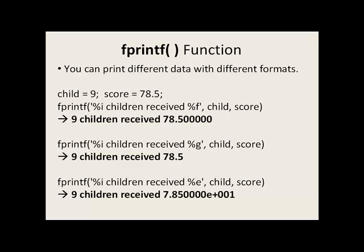You can print off many different types of data with different formats in the same fprintf function. So for example, we say child is 9, score is 78.5. Then we call up our fprintf function. Percent i, so we come to the first percent. That will be associated with the first item in this list. In this case, child.